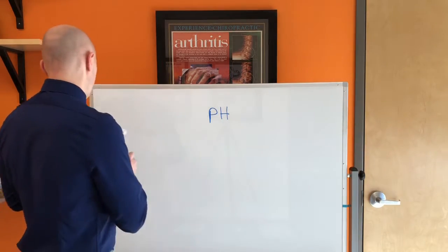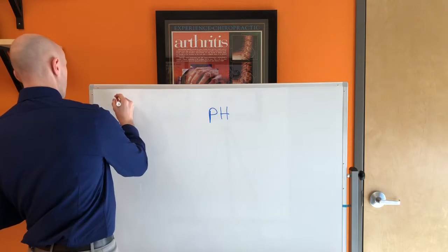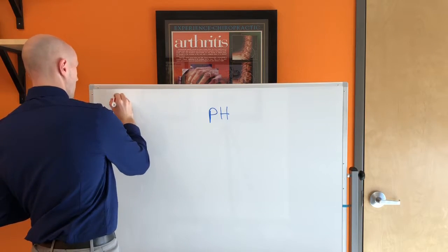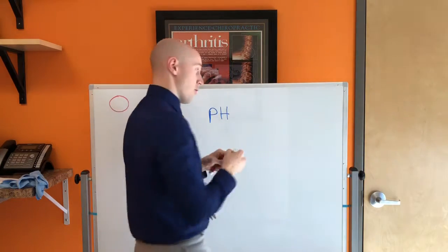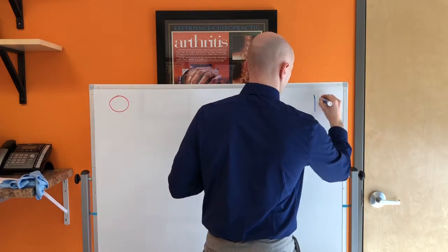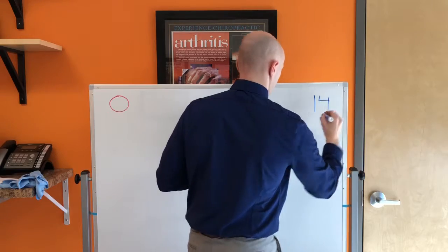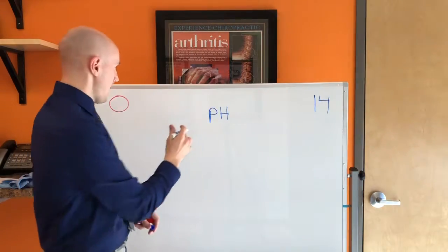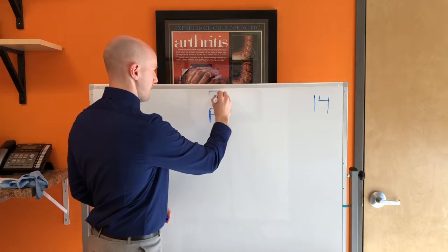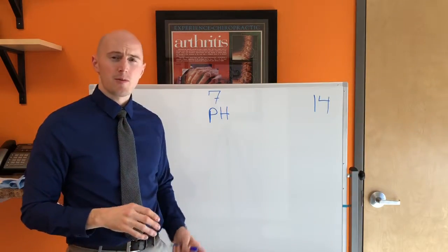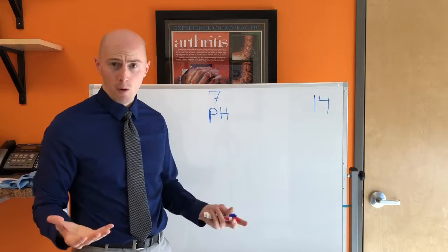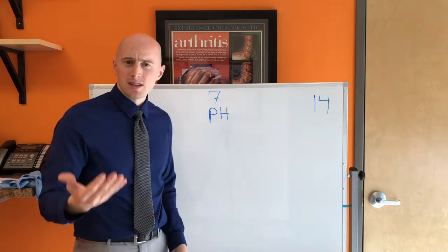We look at the chart here, the pH scale goes from 0 all the way over to 14. 0 to 14. Neutral pH 7. Now your body's pH is going to be right around 7.4.